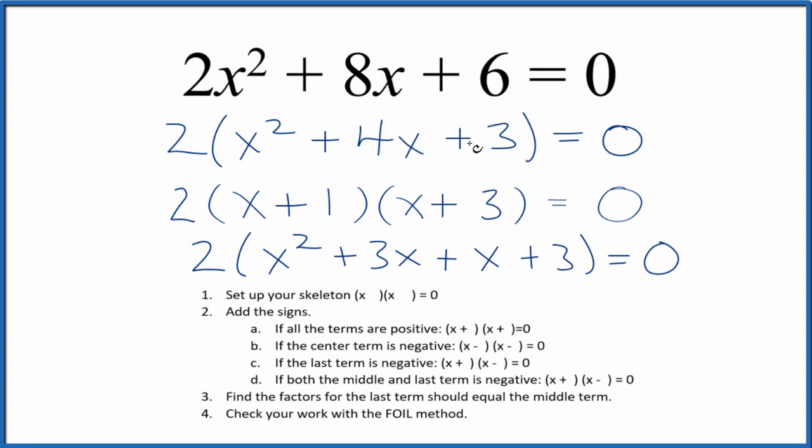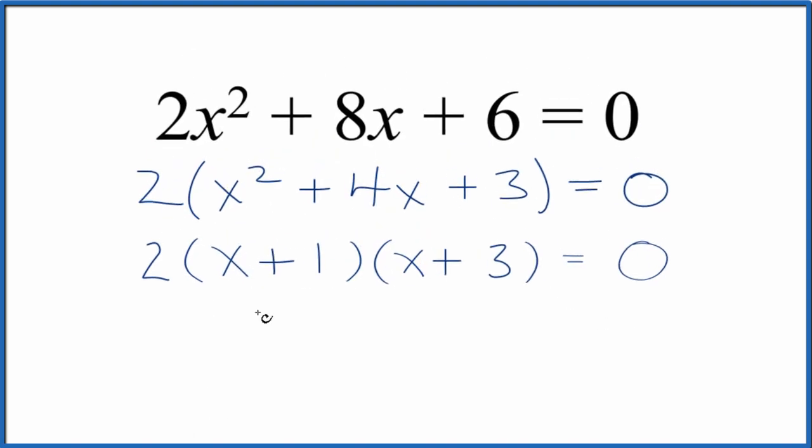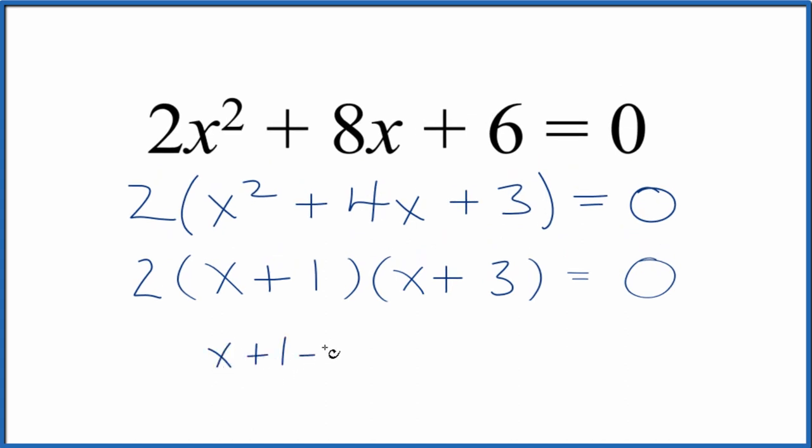So we've correctly factored x² + 4x + 3, or you could even consider we factored the whole 2x² + 8x + 6. Let's quickly find the values for x here that'll make this side of the equation 0. So we could say x + 1 = 0, and then x would equal -1. Over here, x + 3 = 0, so x = -3.